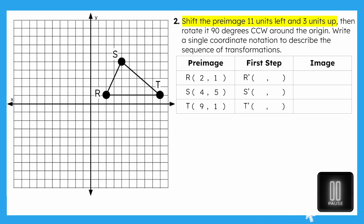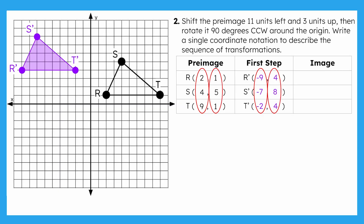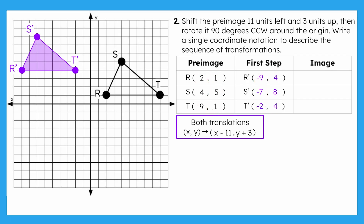Pause the video now. The translation creates RST prime with these coordinates. Take a moment to compare your image and coordinates with what's shown here. The translation decreased the x-coordinate by 11 and increased the y-coordinate by 3. The coordinate notation for this translation is x minus 11 comma y plus 3.